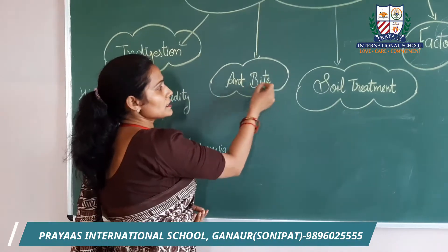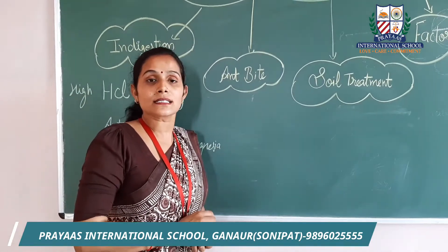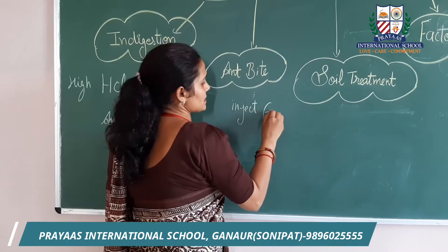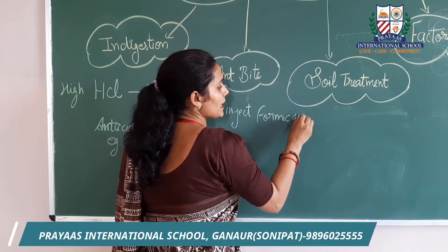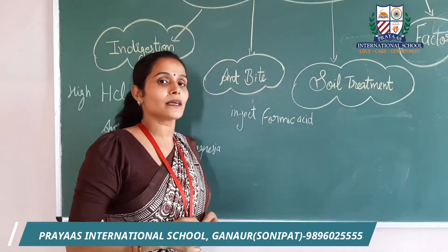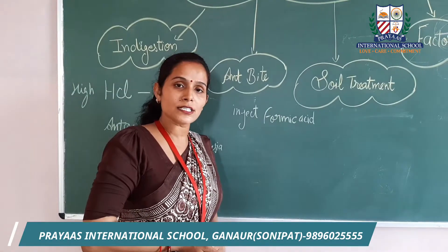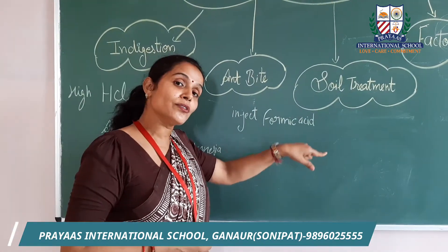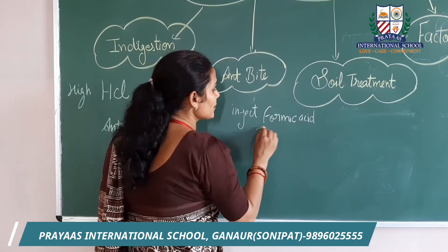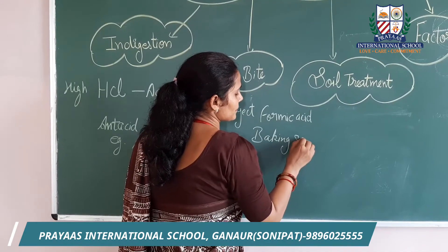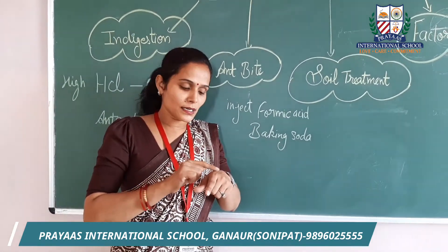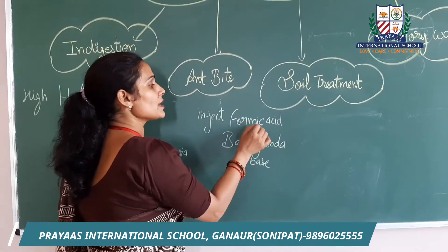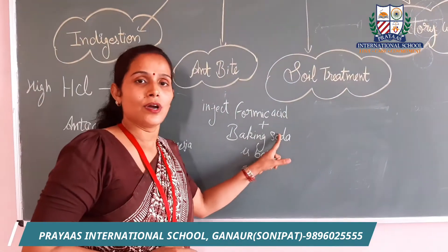Second example is an ant bite. When an ant stings you, it injects formic acid into your skin, which causes itching and irritation. To treat this, we rub baking soda on the affected area. Baking soda is a base, and it neutralizes the formic acid, giving relief.